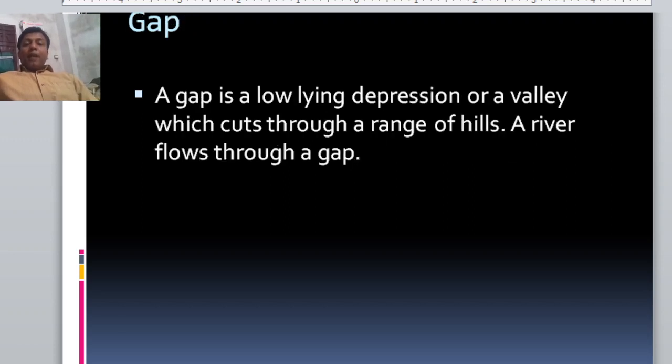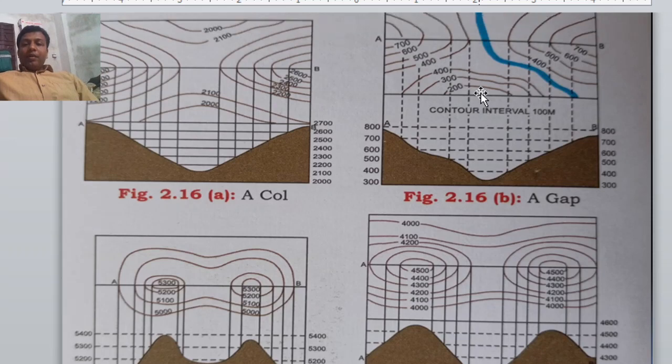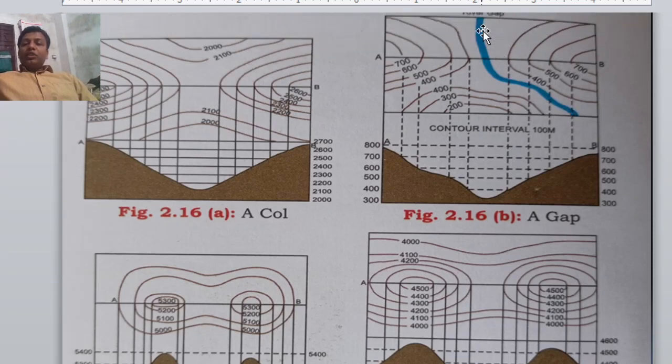Now, gap. A gap is a low-lying depression or valley which cuts through a range of hills. A river is flowing through a gap. Definitely, river is flowing like this. This is the gap we have. And look at this blue line. It shows river. So, if you cut a conical hill on one side into two parts, three side contours lines, conical contours and one small water body or river flowing through it, this is gap.